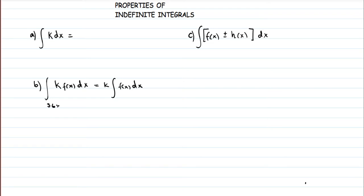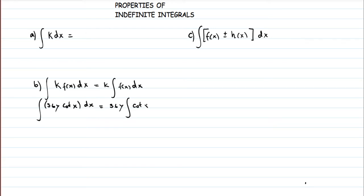For example, suppose you have the integral of 36y·cot(x) dx and you want to find the result. Since this is integration with respect to x, whatever is not in terms of x is treated as a constant. So 36y comes outside, and inside we have the integral of cot(x) dx.